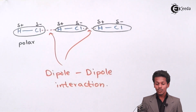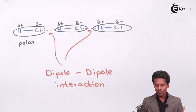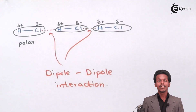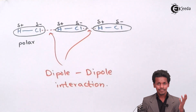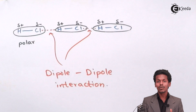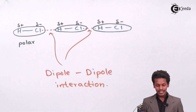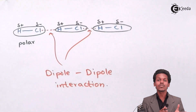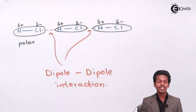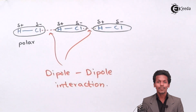It is not necessary that HCl will only bind with HCl to form dipole-dipole interaction. It can bind with any other molecule that is a dipole, which has a permanent dipole moment, or which is polar in nature. Any interaction between two polar molecules is known as dipole-dipole interaction. Because this involves electrostatic force of attraction, dipole-dipole interaction is much stronger than the other types of intermolecular interactions covered in the previous lecture.